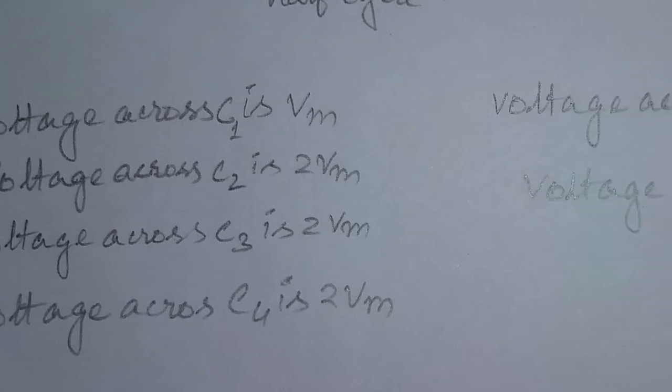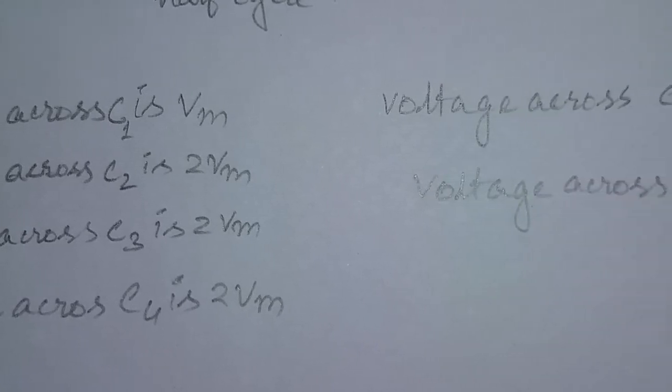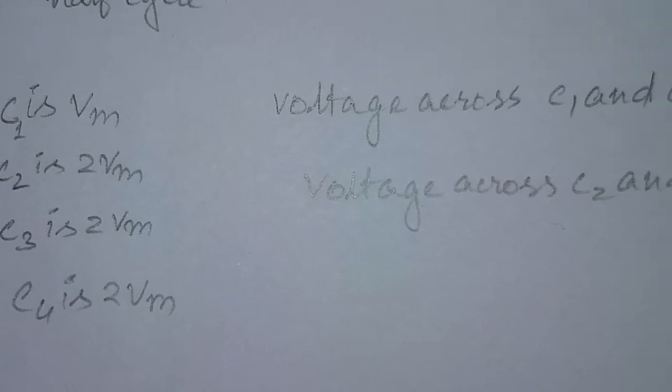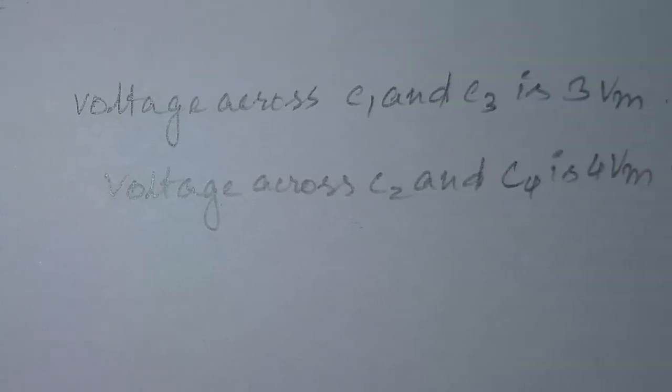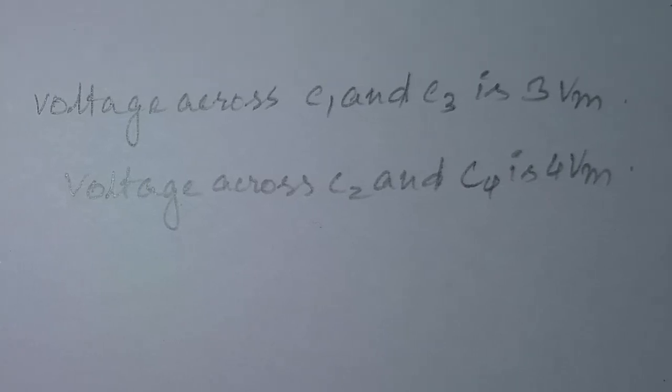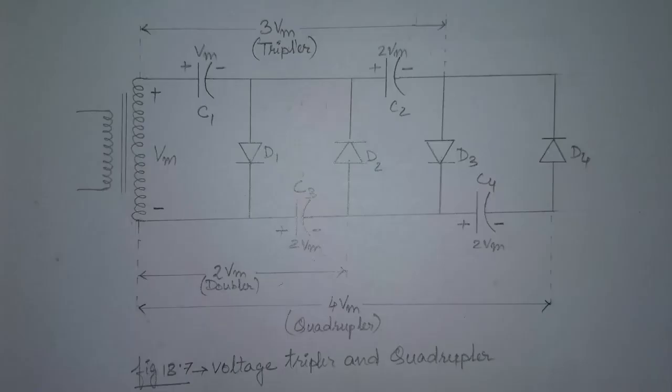In this way, we get a voltage of 3 Vm across capacitor C1 and C3, and 4 Vm across capacitor C2 and C4. The transformer rating is only Vm maximum, and each diode in the circuit must be rated at 2 Vm peak inverse voltage. If the load is small and the capacitors have little leakage, extremely high DC voltage can be developed by using many repetitive sections to step up the DC voltage.